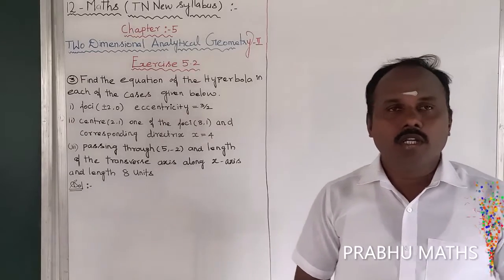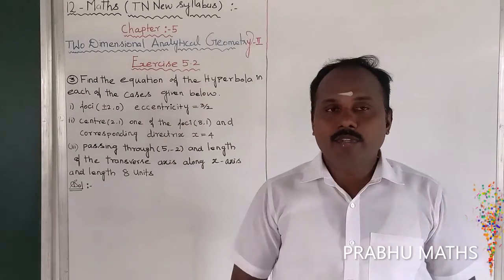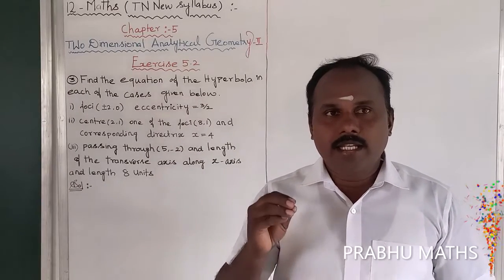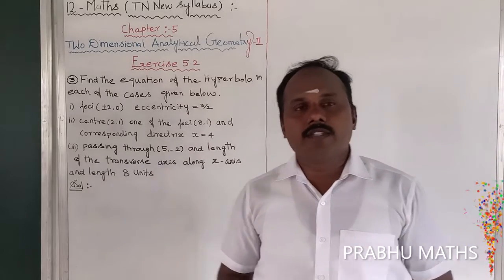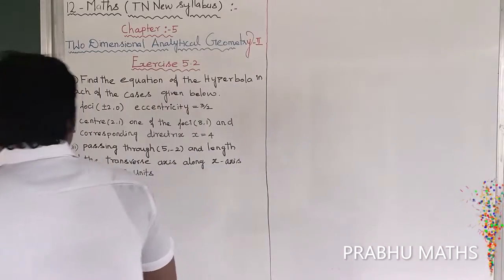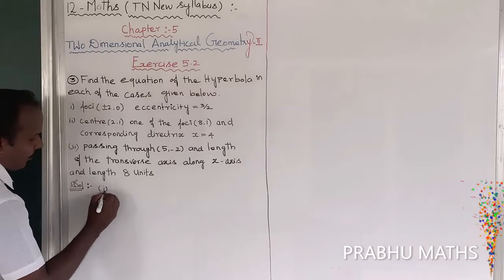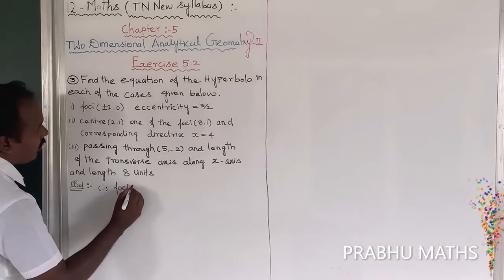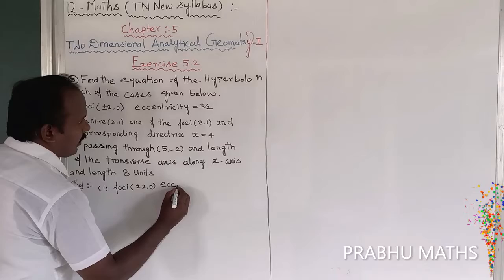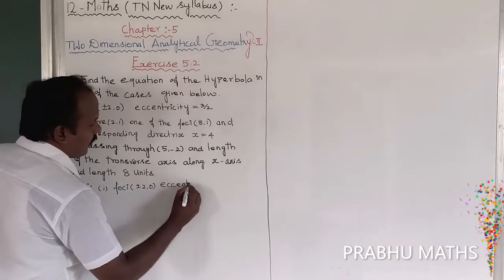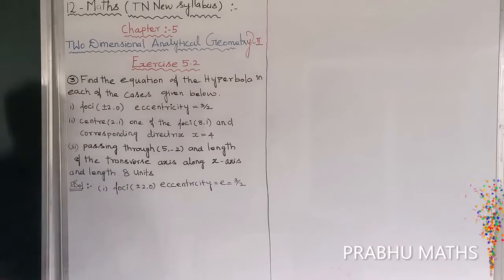To form the equation of the hyperbola, first find out the axis — that is, the transverse axis. The given values are foci at (±2, 0) and eccentricity equal to 3/2.